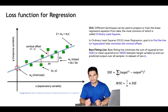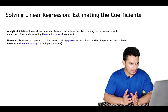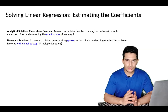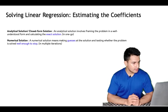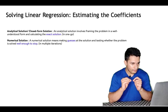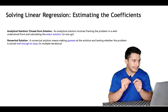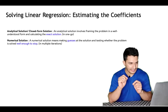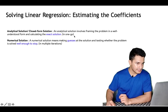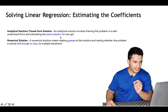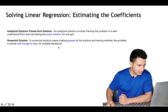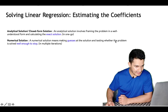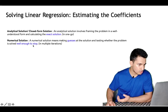To find the right parameters that minimize the loss, there are two types of solutions: analytical and numerical. The analytical solution involves forming the problem in a well-understood form and calculating the exact solution in one go. The numerical solution makes iterative guesses at the solution, testing whether the problem is solved well enough to stop, across multiple iterations.